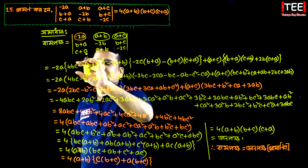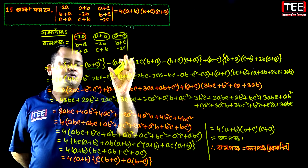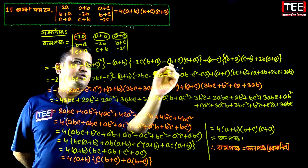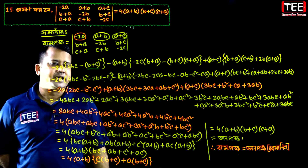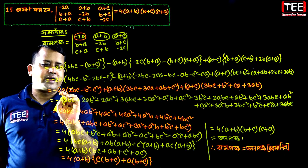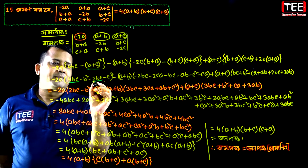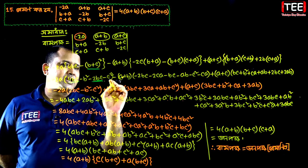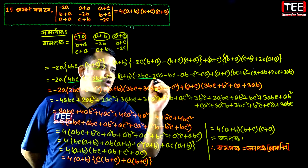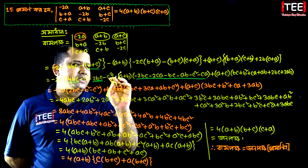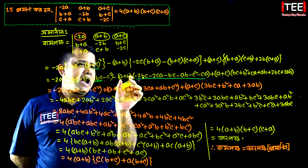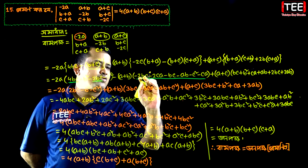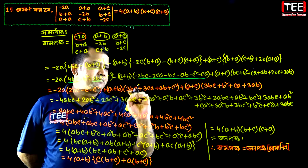So one for 1. We have minus 2a and 4bc minus 2bc, 2bc minus b squared minus c squared. So 2bc and abc, which is 3bc.